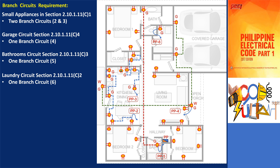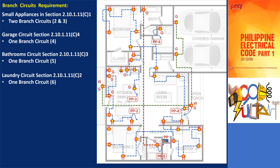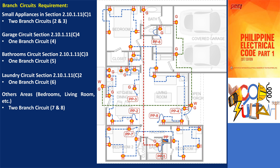Other areas not mentioned, such as bedrooms, hallways, and living room, are provided with two 20-ampere small appliance branch circuits. All fasten-in-place appliances shall have a dedicated branch circuit, as shown in the layout.